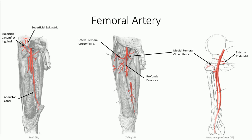Two branches off the profunda femoris wrap around the proximal portion of the femoral neck to supply blood to this region. These are the medial and lateral femoral circumflex arteries. They supply blood to the intertrochanteric mass of bone as well as the proximal femoral head. The lateral femoral circumflex continues to divide, providing three distinct branches: the ascending branch supplies the region surrounding the hip, the transverse branch is specific to the proximal head of the femur, and the descending branch supplies the lateral part of the anterior compartment. As the profunda femoris continues through the deep portion of the anterior compartment, it gives off three to four perforating branches that penetrate the medial compartment to provide vascular supply to the posterior compartment.